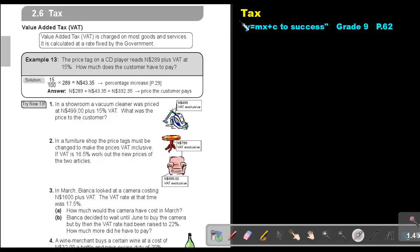Part 10. Tax. You will find this on page 62 in the Namibia Mathematics Grade 9 textbook, Y equals MX plus C to success.